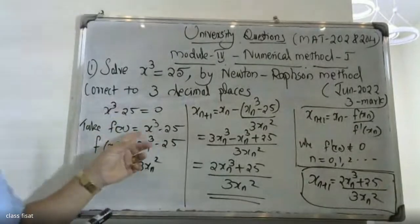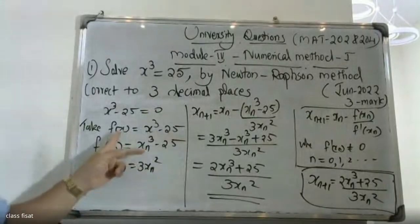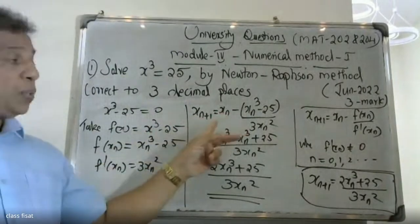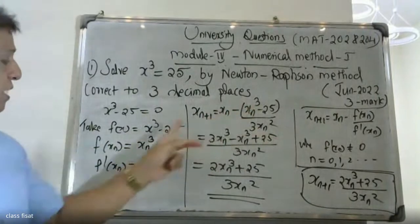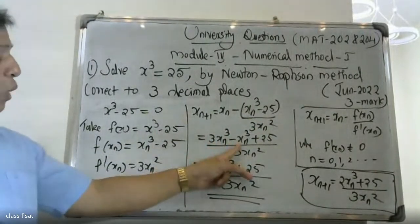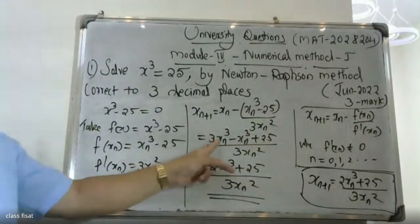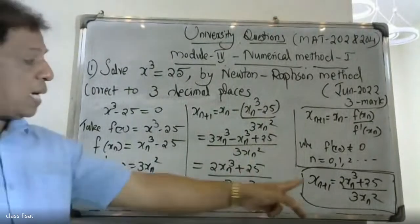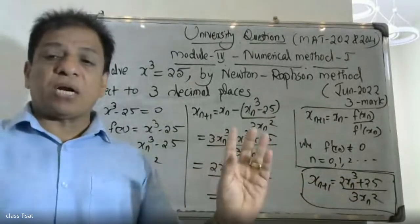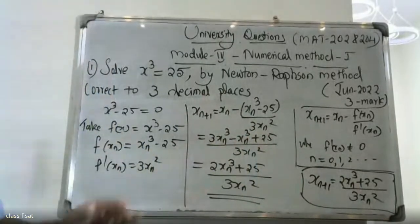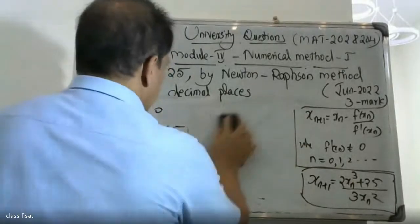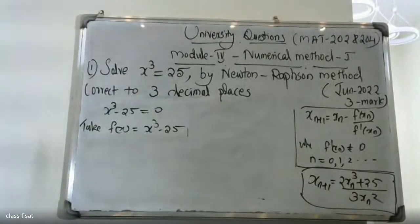The function is f(x) = xₙ³ minus 25. Substituting into the Newton-Raphson formula: xₙ₊₁ = xₙ minus (xₙ³ minus 25) divided by 3xₙ². Simplifying gives xₙ₊₁ = (2xₙ³ plus 25) divided by 3xₙ².